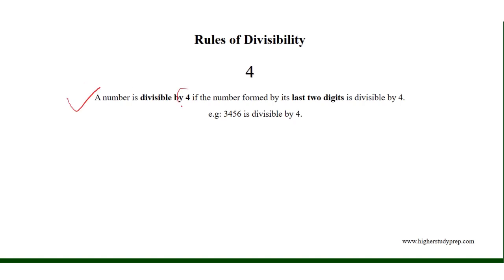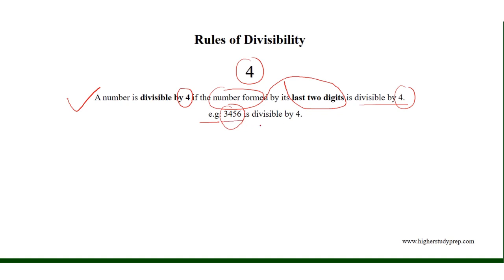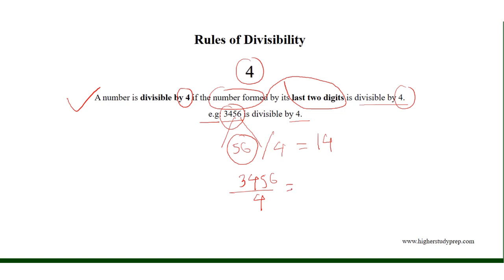A number is divisible by 4 if the number formed by the last two digits is divisible by 4. For example, the number 3456 is divisible by 4 because the last two digits of the number are 5 and 6, and the number formed by them is 56, which is divisible by 4 and the division results in 14. Therefore, the number itself is divisible by 4 and the division results in 864.